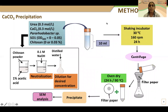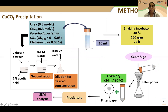Now I move to the methodology. First, we checked calcium carbonate precipitation with and without chitosan. For that, we conducted a laboratory-scale experiment in the presence of urea and calcium chloride, using Pararhodobacter as the ureolytic bacteria, with and without chitosan. The experimental time was 24 hours. After 24 hours, we collected the precipitate and analyzed it using scanning electron microscope.